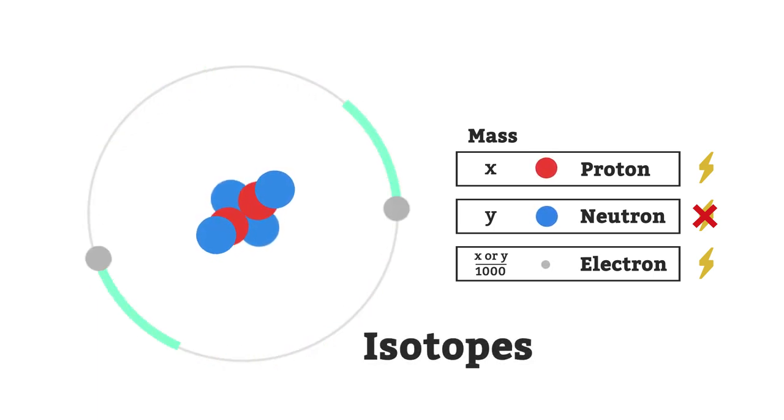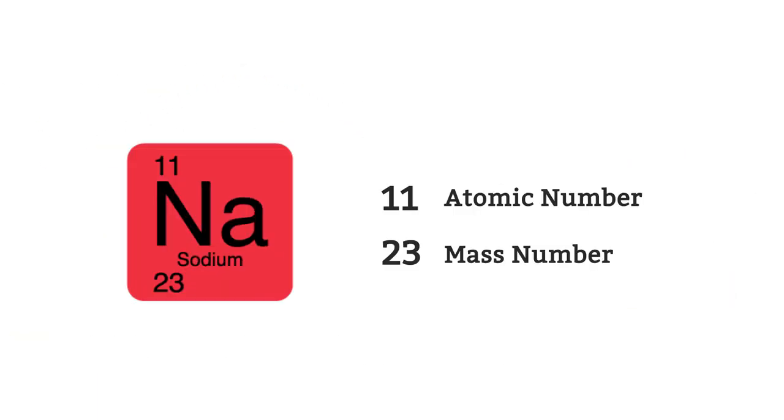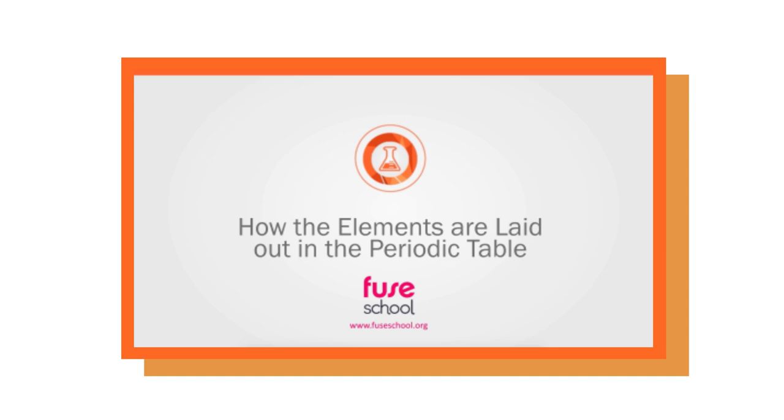You should remember what an isotope is and know how to use atomic and mass numbers to find out how many fundamental particles there are in an element. To learn more, you may want to watch our video on how the elements are laid out in the periodic table.